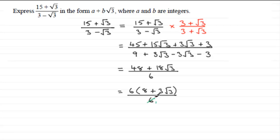And you end up with that answer then: 8 + 3√3. So if they did ask for the values of a and b, you can see that a is 8 and b would have been the 3.